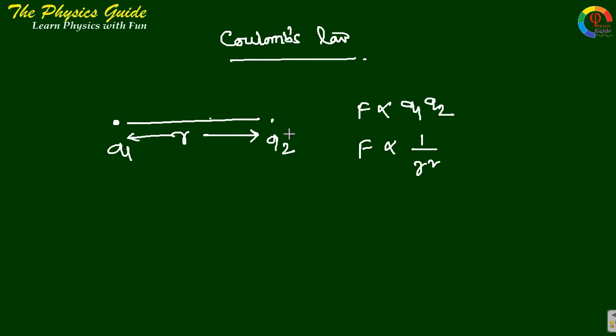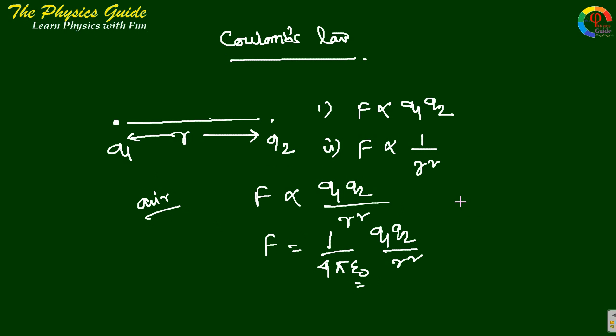If we take these both two equations one and two in a single equation we get Q1 Q2 by r-square. If we take a proportionality constant, in SI we take 4 pi epsilon naught, so F equals Q1 Q2 by 4 pi epsilon naught r-square. If we take the medium as air then epsilon naught, but if the medium we replace with a medium of epsilon, then the force always equals Q1 Q2 by 4 pi epsilon r-square.